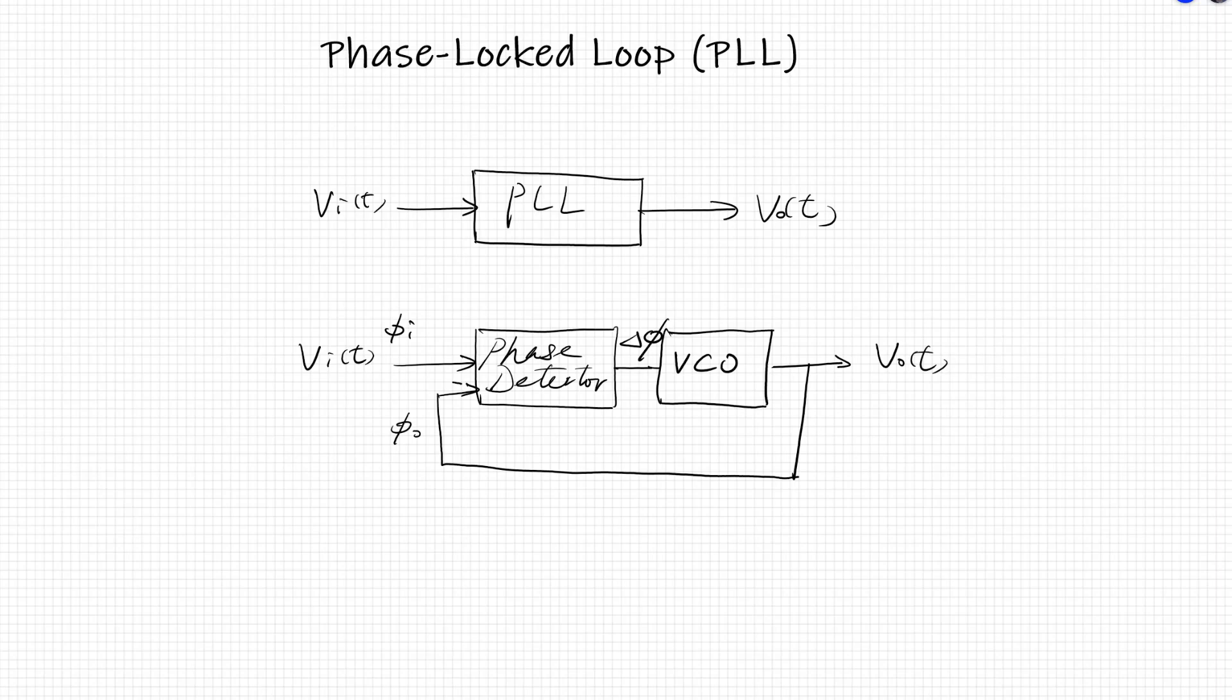The VCO is a module that oscillates at a controlled frequency. So we have the voltage of this controlled voltage, and the frequency, the oscillating frequency, is monotonically related with V control. Usually it's monotonically increasing. So this describes the voltage controlled oscillator input and output.